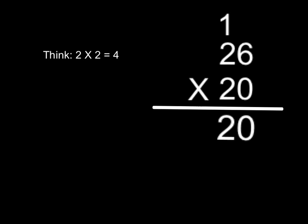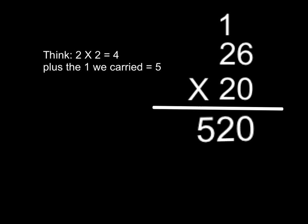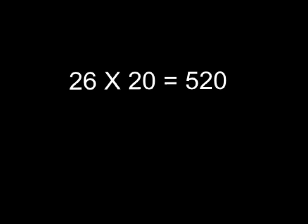Now we're going to multiply. We did the 2 times 6. Now we're going to do 2 times 2. 2 times 2 is 4, plus the 1 that we carried. 4 plus 1 is 5, so we're going to write down the answer as 5. The product of 26 and 20 is 520. That's as hard as this one is.